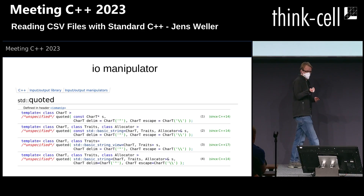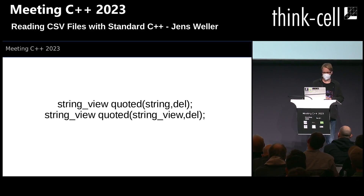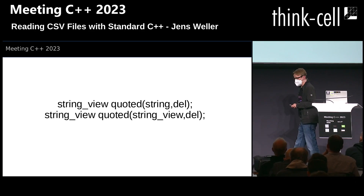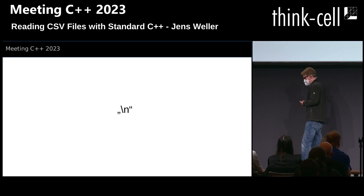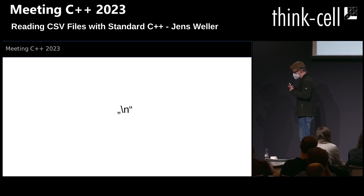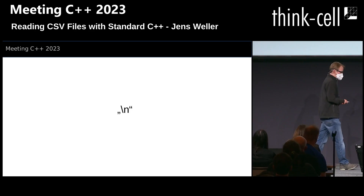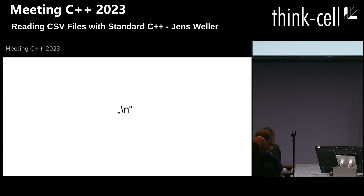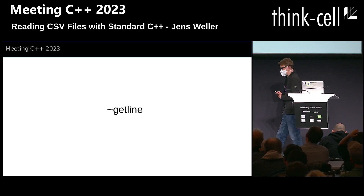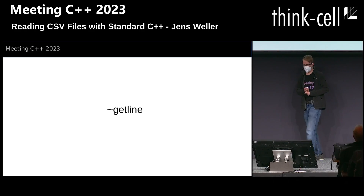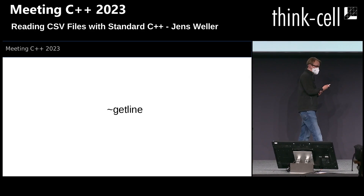I understand that it's probably not possible for an IO manipulator on an IO stream to give you a string view back. But it would be nice to have an interface where you can read from a string or a string view and get a string view back, with a delimiter. There's actually a CSV file I'm really interested to read because it contains interesting data. Unfortunately, it also has this newline character inside quotes, which prevents you from using getline.